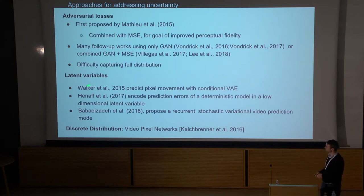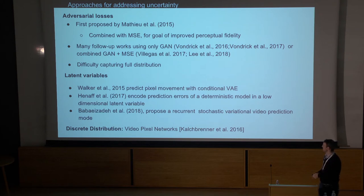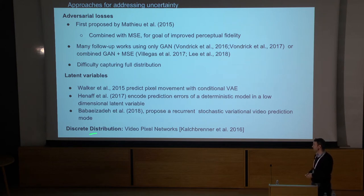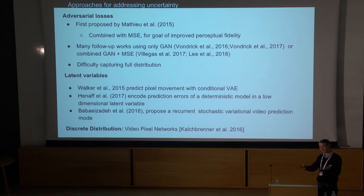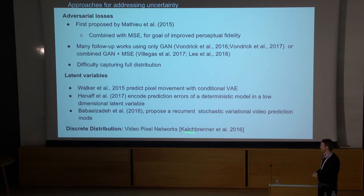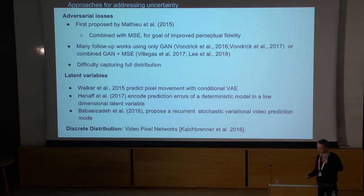The approach I'm going to talk about uses latent variables — a latent variable whose particular instantiation corresponds to a particular future you'll see. Finally, one very nice way of handling uncertainty is a discrete distribution, which can easily handle multiple modes. But if you have a high-dimensional signal like a video sequence, it's hard to represent that as a discrete object. There's a line of work from DeepMind predicting in a raster scan fashion, one pixel at a time, where each pixel has a little discrete distribution over intensity values.